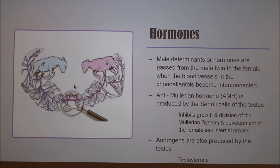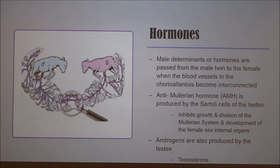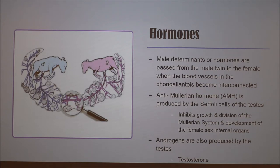Testicular development usually occurs before ovarian development in cattle, so hormones from the male pass to the female before her development occurs. One hormone exchanged from the male to the female is anti-Müllerian hormone, or AMH, produced by the Sertoli cells of the testes. AMH inhibits growth and division of the Müllerian or fallopian tubes, also known as the paramesonephric ducts. This system normally persists and differentiates in the female to develop into the uterus and part of the vagina. The testes also produce androgens, predominantly testosterone, which when passed to the heifer cause masculinization as well as the development of some male reproductive structures.